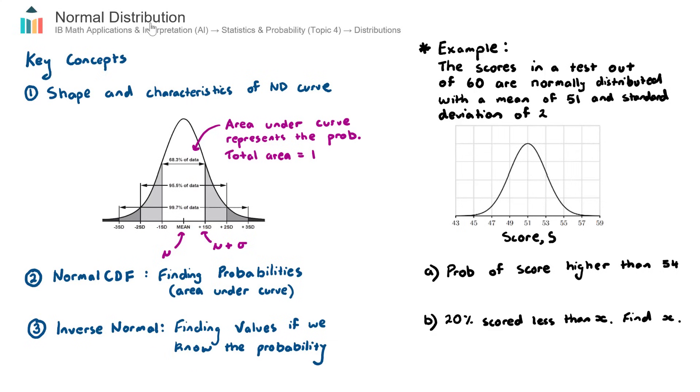In this video, we look at normal distribution, which is part of the AI course under Topic 4, Statistics and Probability, under the subtopic of distributions.